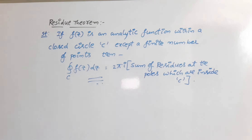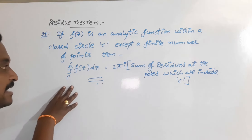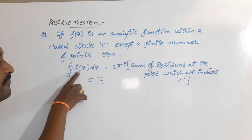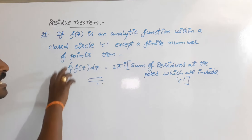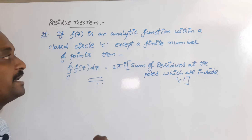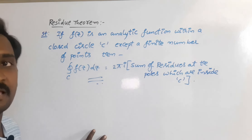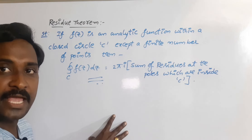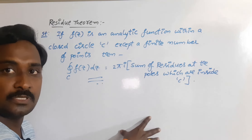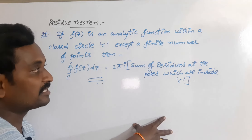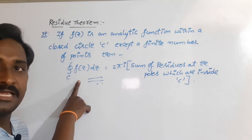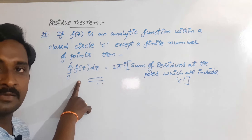From the statement of the residue theorem it is clear that we can use this theorem to evaluate the circular integral of an analytic function f(z) over C, where f(z) is analytic at each and every point inside C except a finite number of points known as singularities or poles. We find residues at those poles and then use this formula to find the integration.